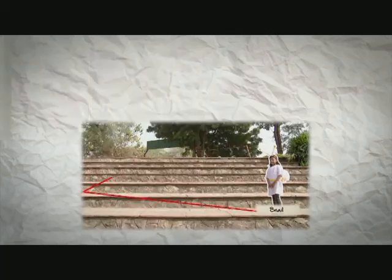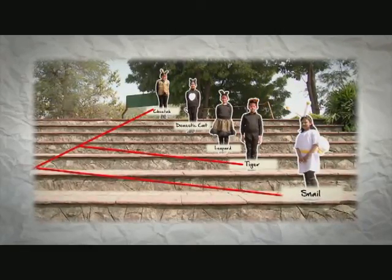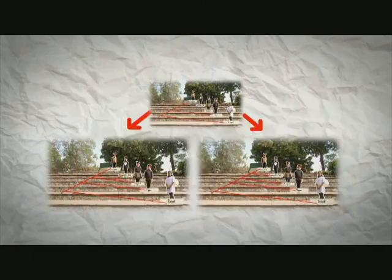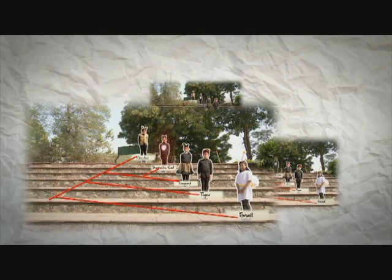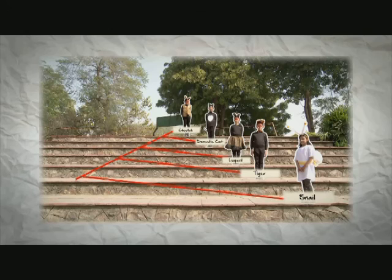The closest any two species get is three — and that is for all four types of felines — so we guess that the cats are more closely related. This places the snail at the bottom of the tree. Among cat, leopard, and tiger, we make the cheetah the first species to branch away, then the tiger branches before the other two. We use mathematical methods of optimization to fit the best tree to the data, helping us determine the evolutionary journey of animals.